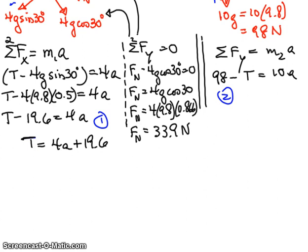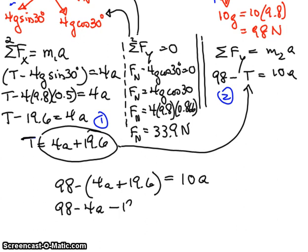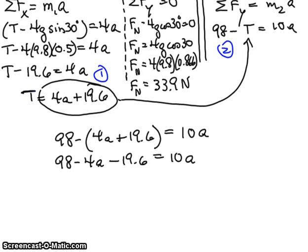And so what we're going to do is we're going to take this and plug it in there. And so if we do that, we get 98 minus 4a plus 19.6. Don't forget to put the parentheses around there. And that's going to equal 10a. I have to remember the parentheses are around there because I have to distribute the minus sign.